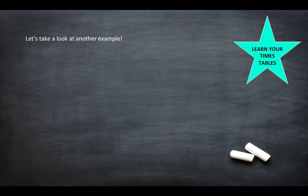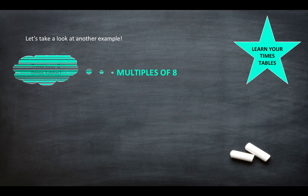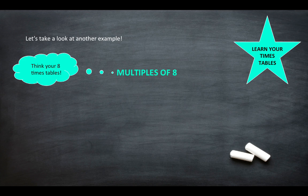Let's take a look at another example. So the multiples of 8. So again, think your 8 times tables. So we've got 1 times 8 is 8, 2 times 8 is 16, 3 times 8 is 24, 4 times 8 is 32.